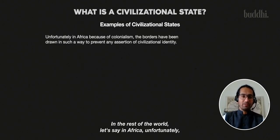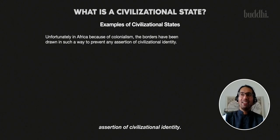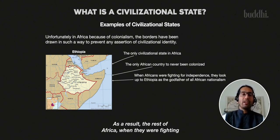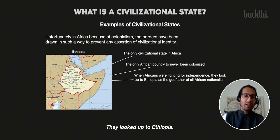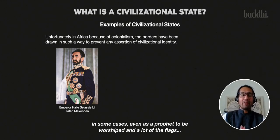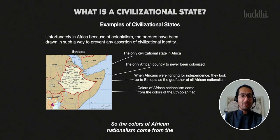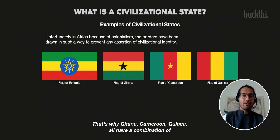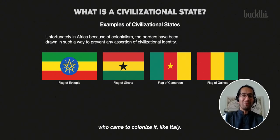In the rest of the world — in Africa — unfortunately because of colonialism, borders have been drawn in such a way to prevent any assertion of civilizational identity. The only civilizational state in Africa is Ethiopia, the only country never to have been colonized. You can draw a straight line between ancient, medieval, and modern Ethiopia. As a result, when the rest of Africa was fighting for independence, and even when Afro-Caribbeans were fighting for independence, they looked up to Ethiopia — to Emperor Haile Selassie, Rastafari Makonnen — in some cases even as a prophet. The colors of African nationalism come from the Ethiopian flag, which is why Ghana, Cameroon, and Guinea all have green, yellow, and red in their flags — to pay tribute to the only African civilization never colonized, and one that defeated Europeans who came to colonize it, like Italy.